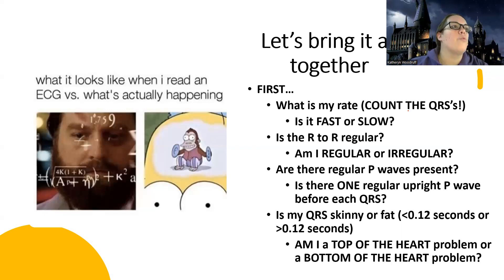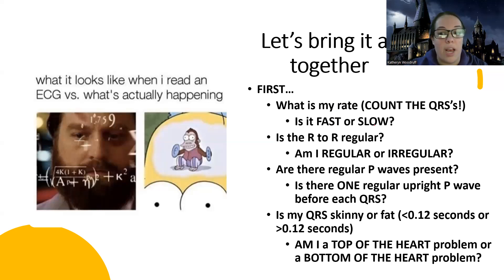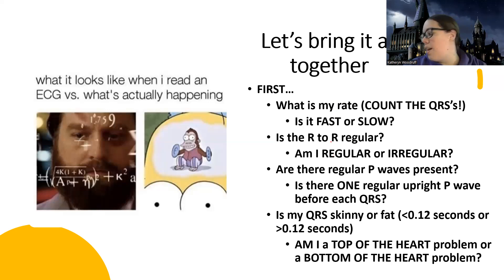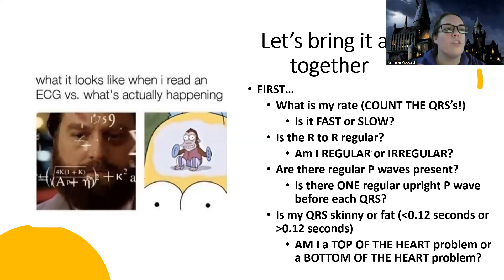The general things — and I'll break this up into different mini videos — are: first, we want to figure out what is our rate. We want to count the QRS complexes like we've been doing and determine if it's fast or slow, because there are certain rhythms that are fast and certain that are slow. Then regularity — remember there was only one rhythm that was not regular for my atrial rhythms, and that was atrial fibrillation. So if I can determine whether it's regular or irregular, it can start telling me which rhythm it is.